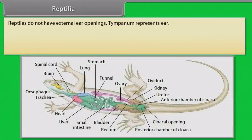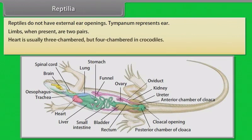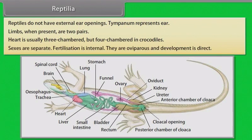Reptiles do not have external ear openings. Tympanum represents the ear. Limbs, when present, are two pairs. Heart is usually three-chambered, but four-chambered in crocodiles. Sexes are separate. Fertilization is internal. They are oviparous and development is direct.